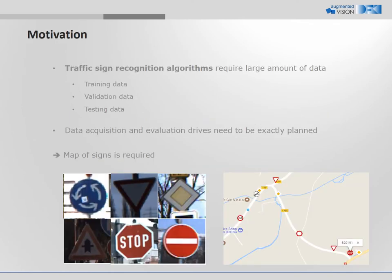Recent traffic sign recognition algorithms are usually machine learning based. Such algorithms require large amounts of data for training, validation, and testing. The acquisition as well as real test drives need to be exactly planned in order to cover all required data. Especially in the case of rare signs, it is a very challenging task to plan these drives.